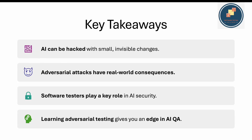Key takeaways: AI can be hacked with small, invisible changes — even one pixel can matter, and prompt-based attacks can cause completely different outputs. Adversarial attacks have real-world consequences. Software testers play a key role in AI security — when you get a chance to test AI models, this is something you need to test. Learning adversarial testing gives you an edge in AI QA, especially from 2025 onwards as AI model testing becomes more common.